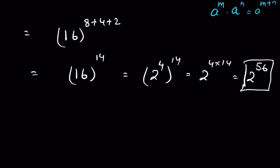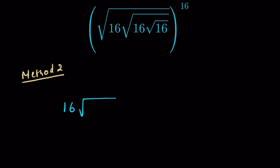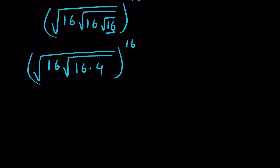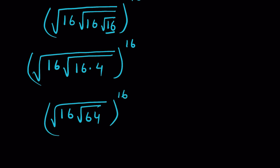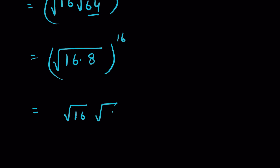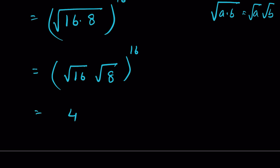Now let's try the second method. We have 16 times √16 times √16, all under a square root, whole to the power of 16. Since √16 = 4, we write 16 times √(16 times 4) = 16 times √64. Since √64 = 8, this becomes √(16 times 8) whole to the power of 16, which equals √16 times √8 to the power of 16.